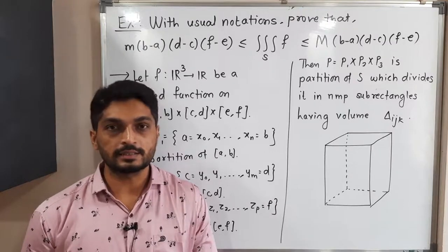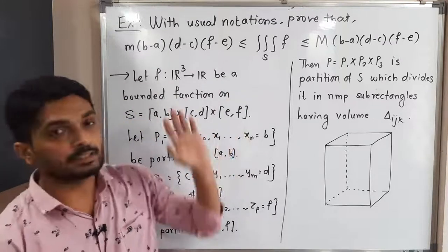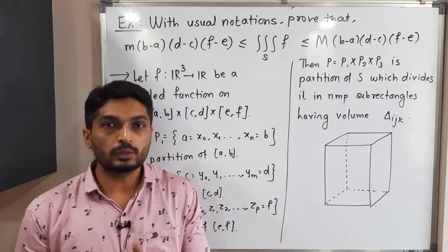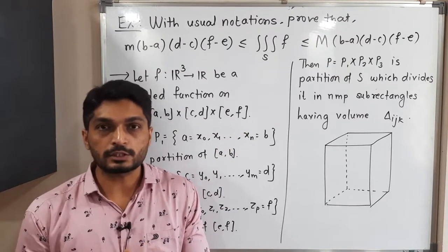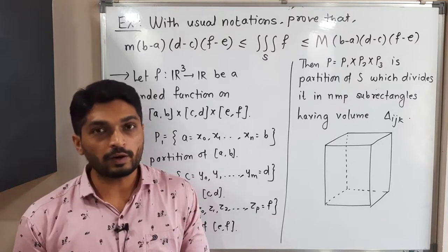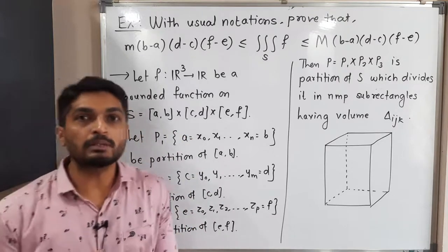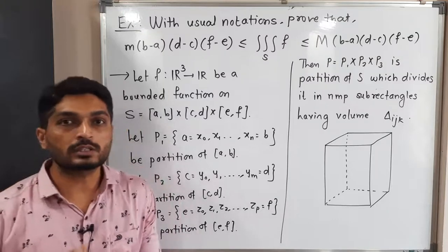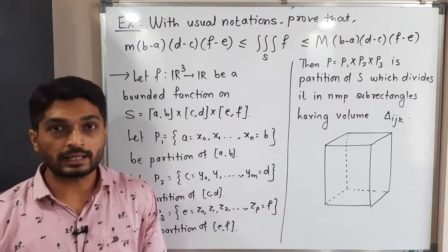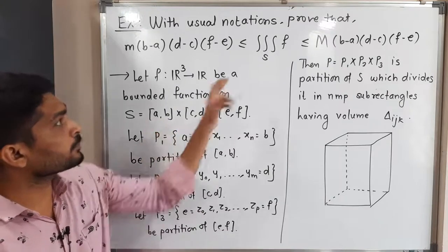Let us discuss this result. We have to prove this inequality with some standard notations. Here we consider a bounded function f defined on S, where S is nothing but [a,b] × [c,d] × [e,f] — that means S is a cuboid, as you can see in this diagram.